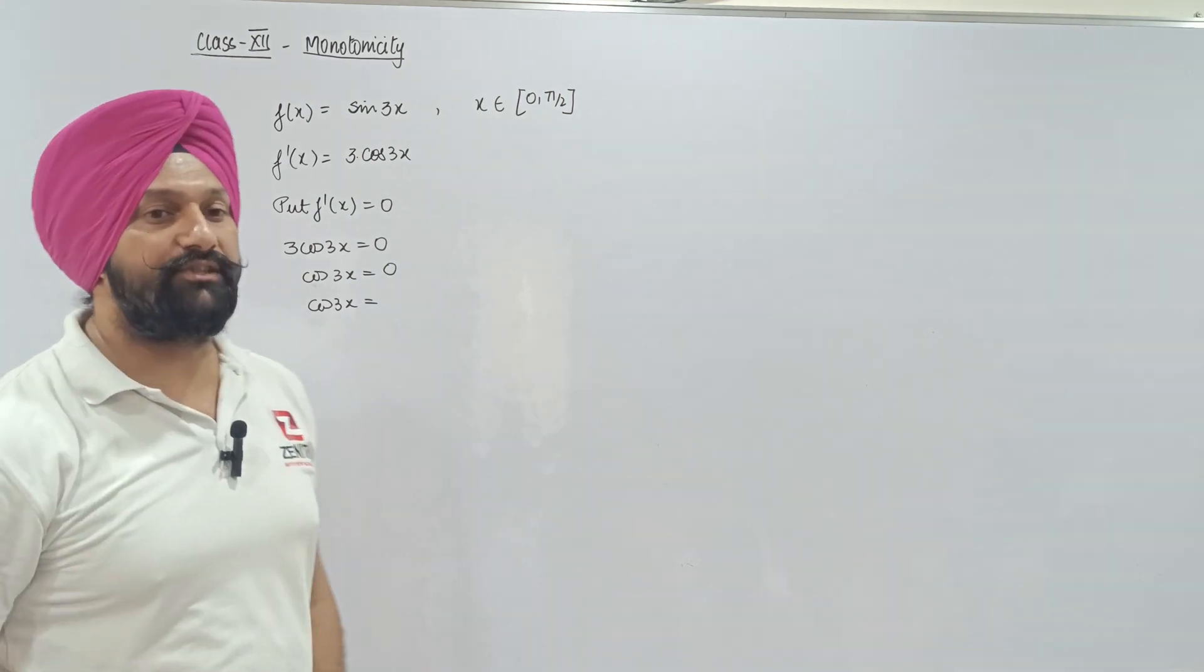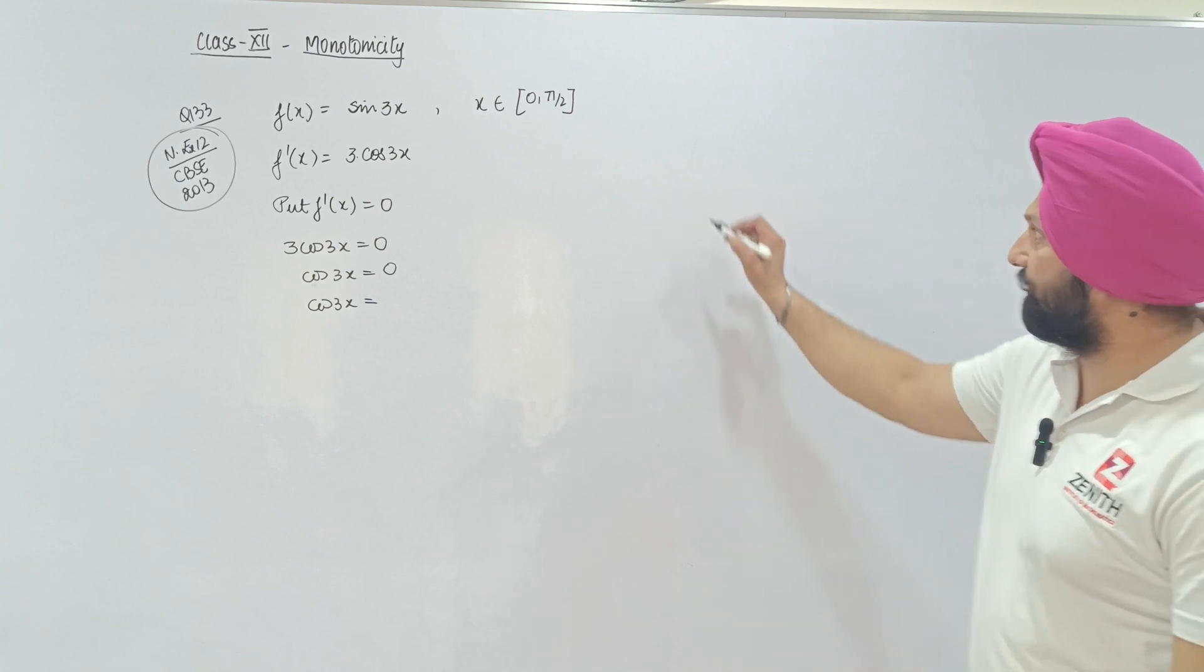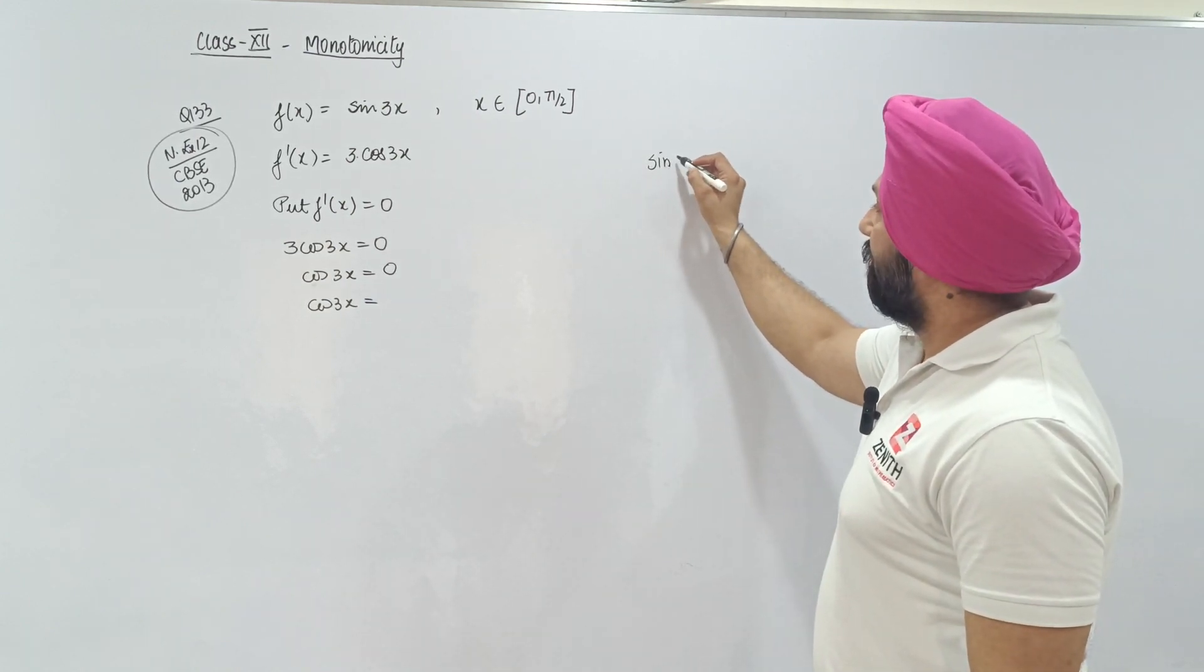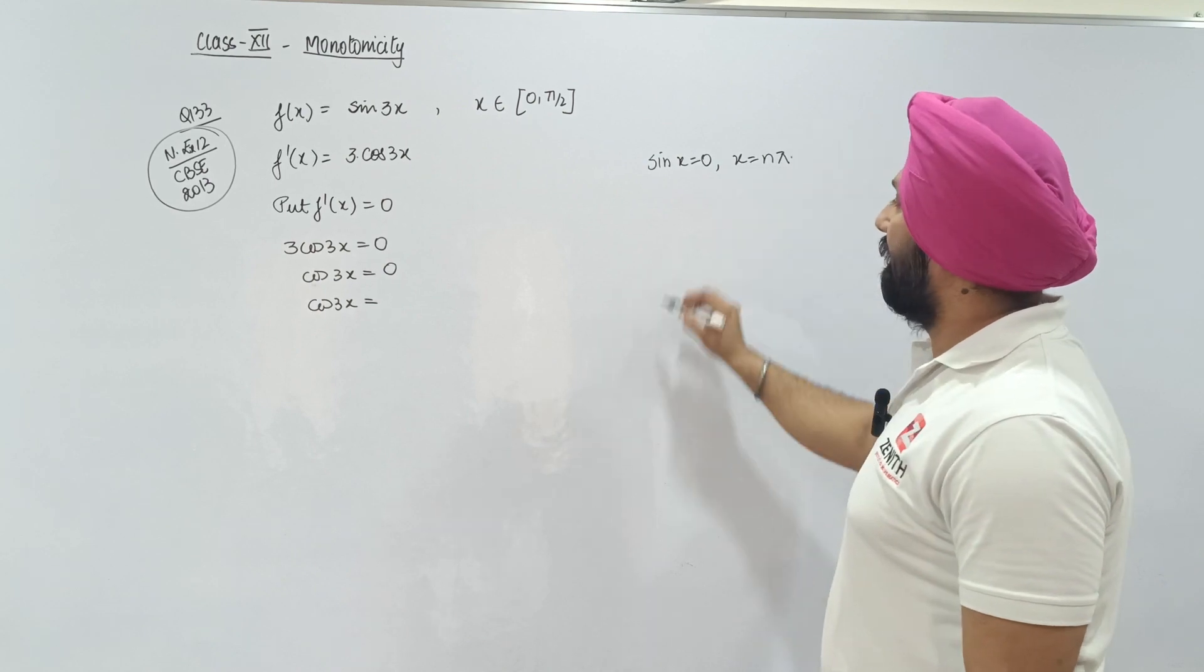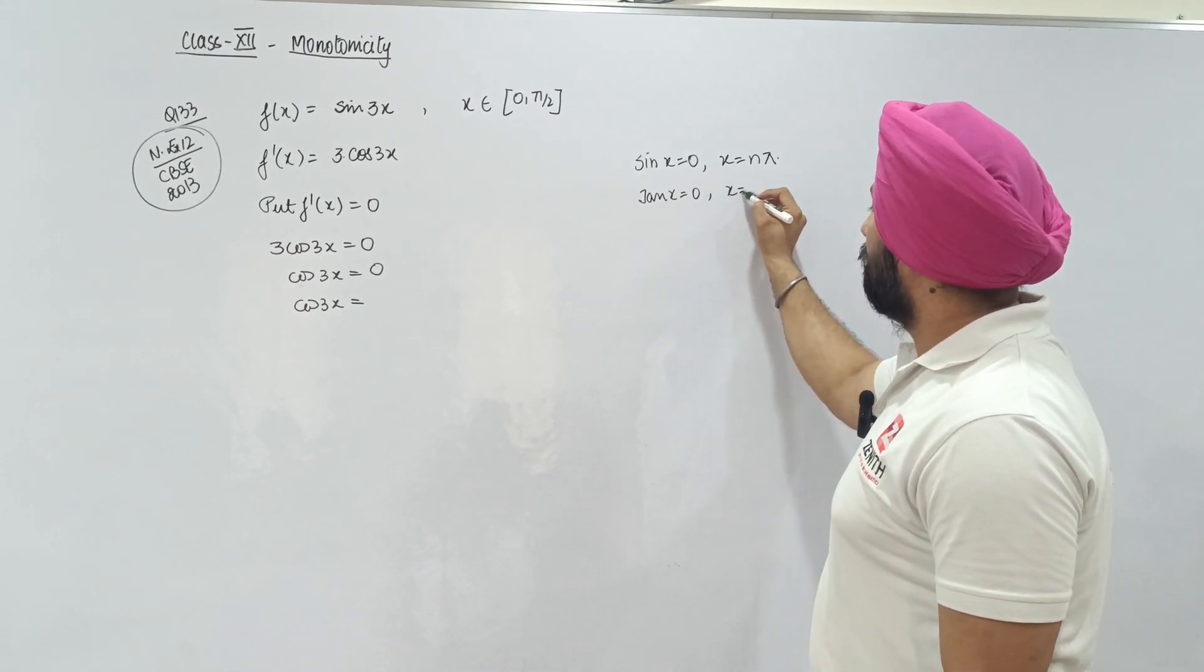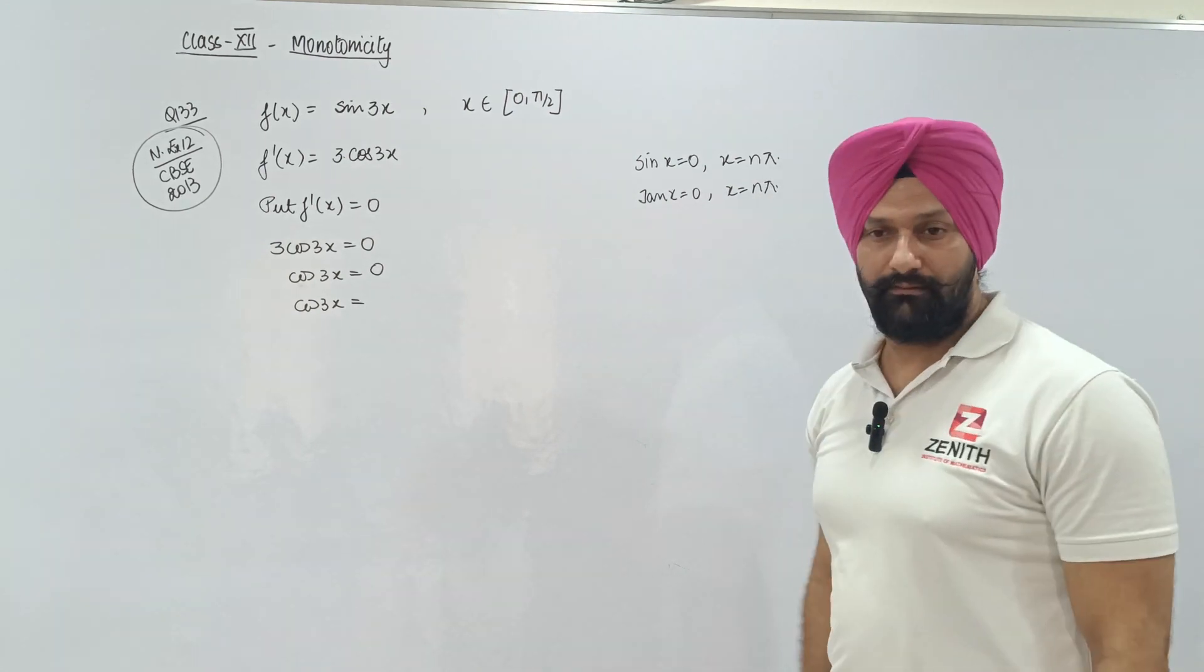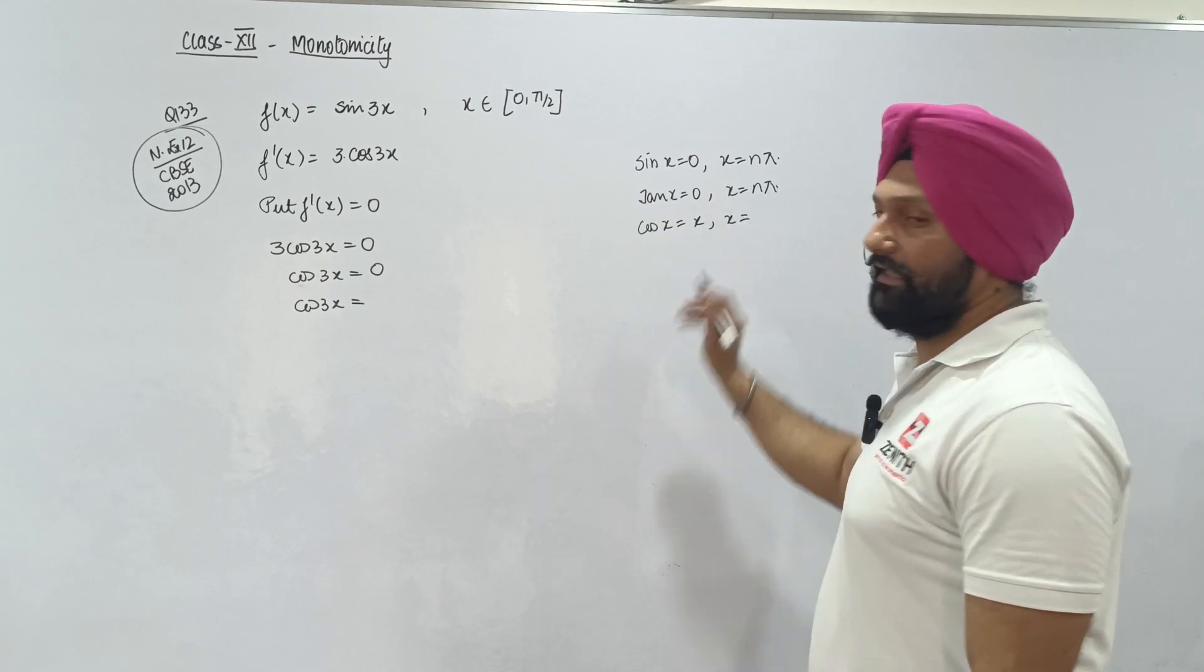Recall general solution of cosine. If sin(x) = 0 then x = nπ. If tan(x) = 0 then x = nπ. And if cos(x) = 0 then x equals what?